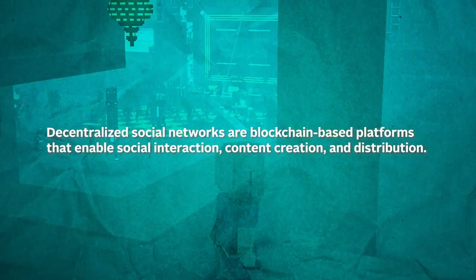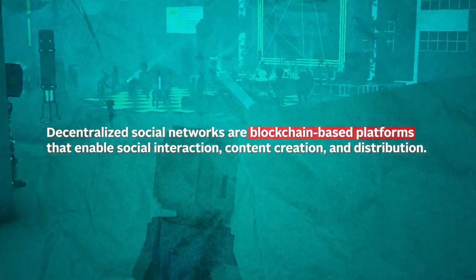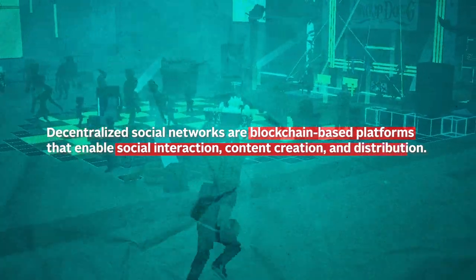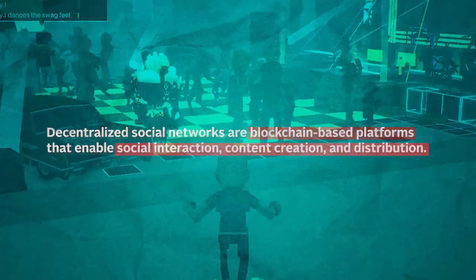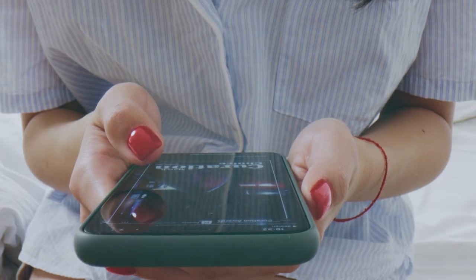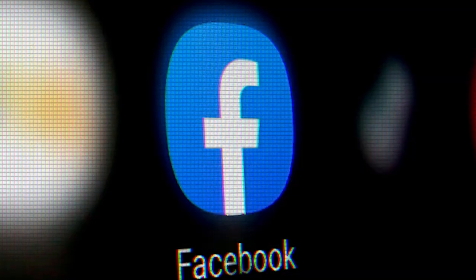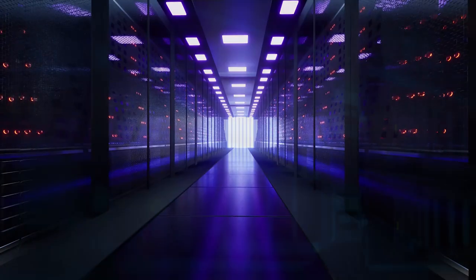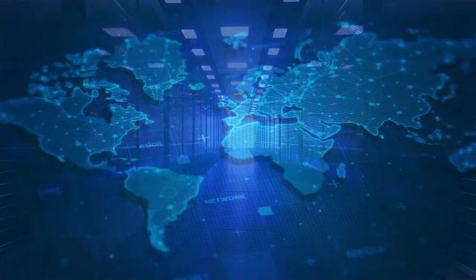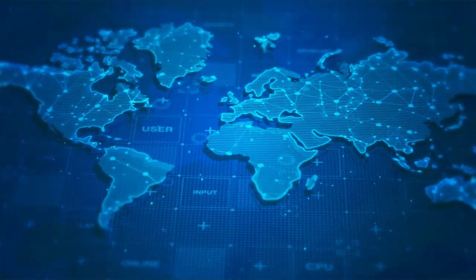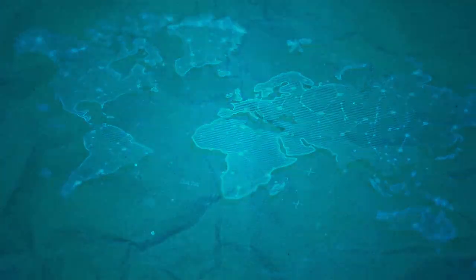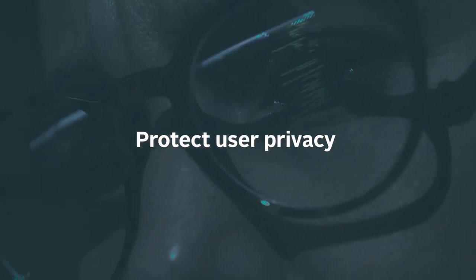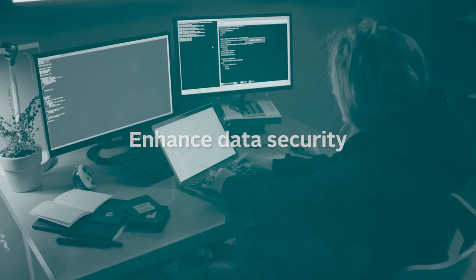Decentralized social networks are blockchain-based platforms that enable social interaction, content creation, and distribution. You can think of them as having all of the characteristics you know from Facebook and Instagram. Still, instead of relying on a server in the company's buildings, they rely on a distributed network of computers — the blockchain. They are decentralized social media networks that protect user privacy and enhance data security.